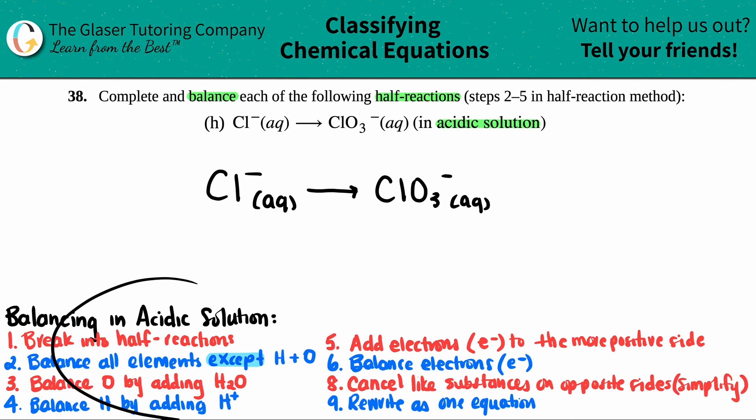So I wrote down all of the steps for balancing in acidic solution for redox reactions. However, since they only gave us a half reaction, we only have to do steps two through five, because step one of the whole process is to break it into the half reaction. They did that already for us. So thank you very much. Now we just have to do steps two through five. Steps six through nine is when you have both half reactions. We'll see that later on.